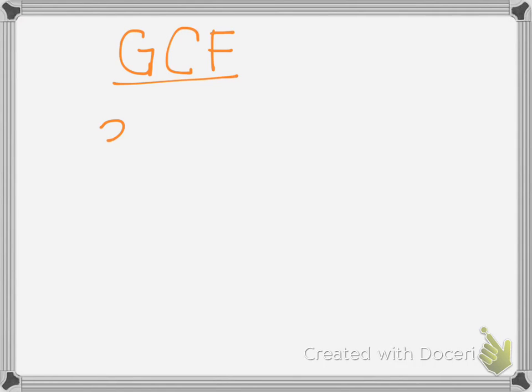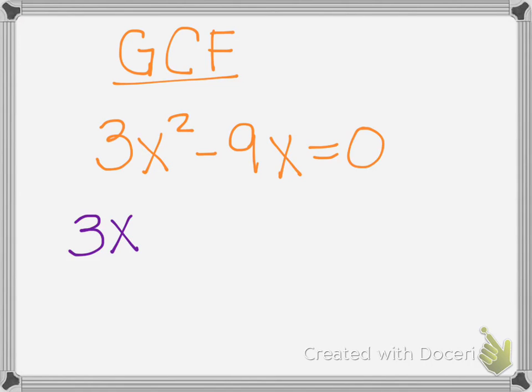So here's your first example: 3x squared minus 9x equals 0. The type of factoring we're going to do is take a GCF out. You're going to ask yourself, what is the greatest factor that goes into 3 and 9, which is 3, and then what is the greatest factor that goes into x squared and x, which is just 1x.